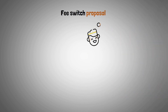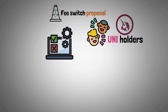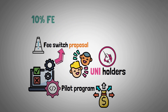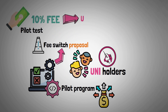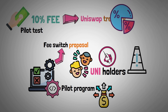The fee switch proposal, which was overwhelmingly supported by UNI holders, has changed this. To test out the fee switch proposal, Uniswap is currently conducting a pilot program with specific liquidity pools. A 10% fee is charged, and the money gained from this pilot test will stay in the treasury until UNI holders decide how to divide the money.